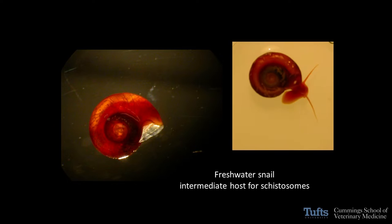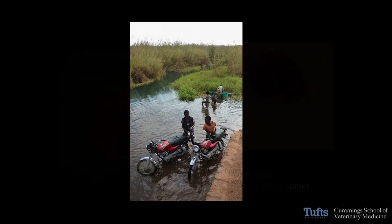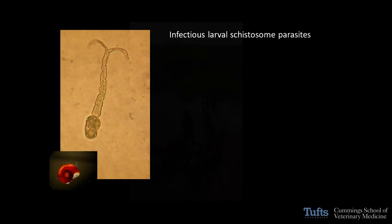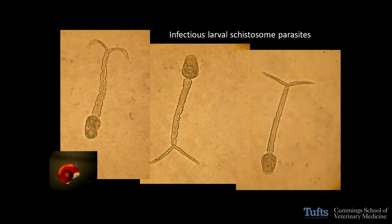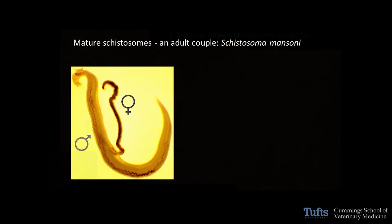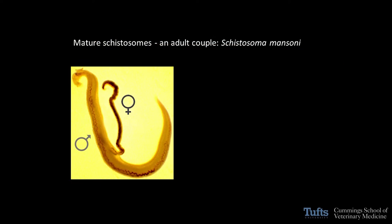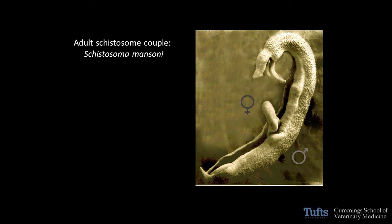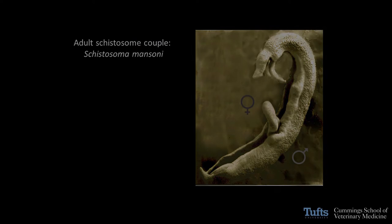These are parasites that spend part of their lives inside freshwater snails. They replicate there, so if you and I go into the water when the larval parasites are emergent, they can penetrate our skin, infect our blood vessels, and mature there and live there for many, many years.